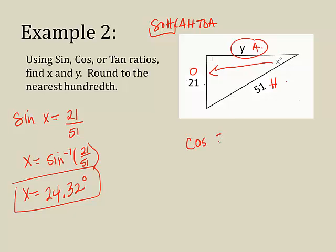So, if I use the adjacent and the hypotenuse, that would be cosine. So, I'm going to say the cosine of 24.32 degrees equals the adjacent over the hypotenuse. And then I would solve it.